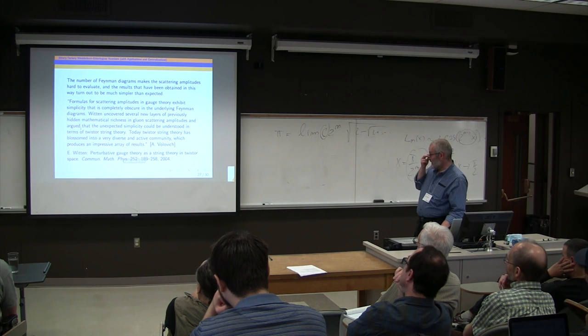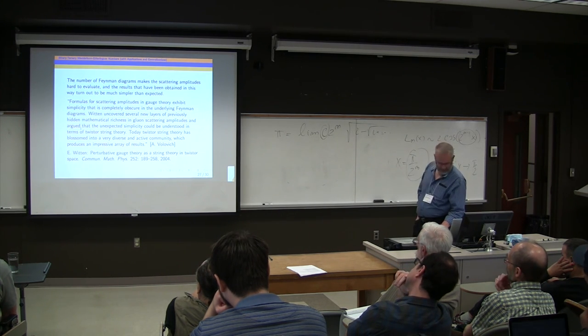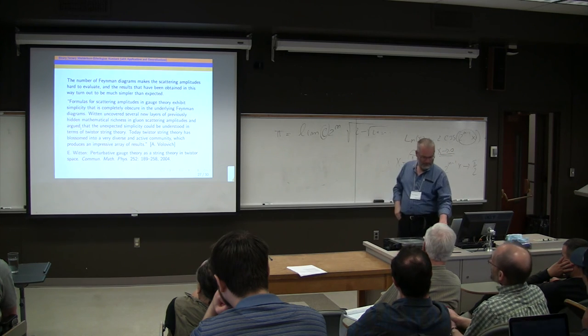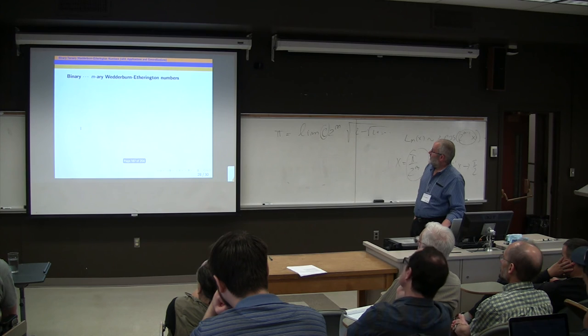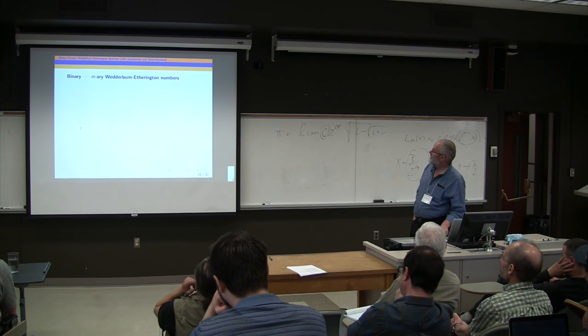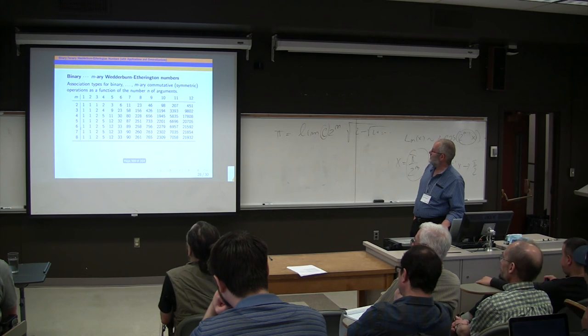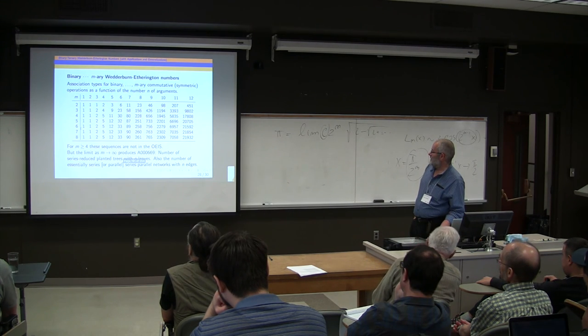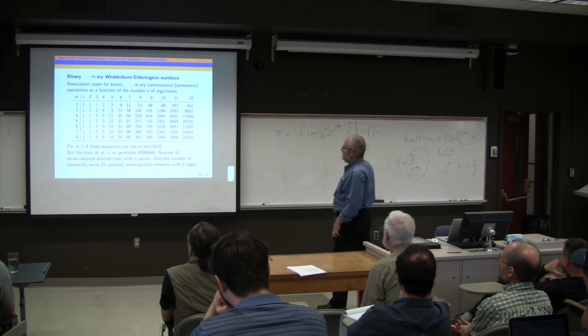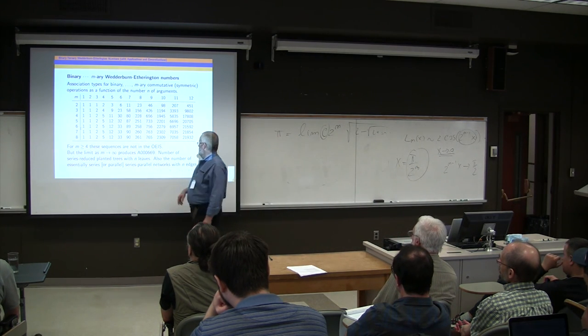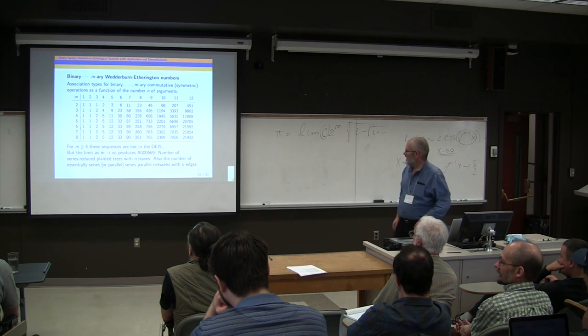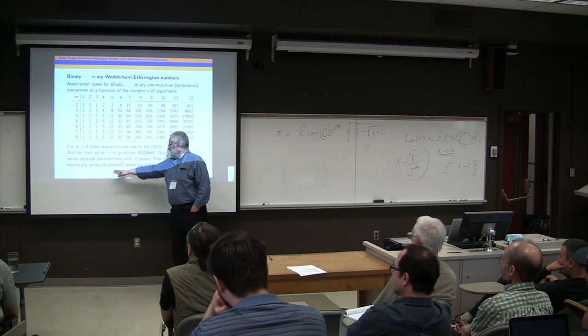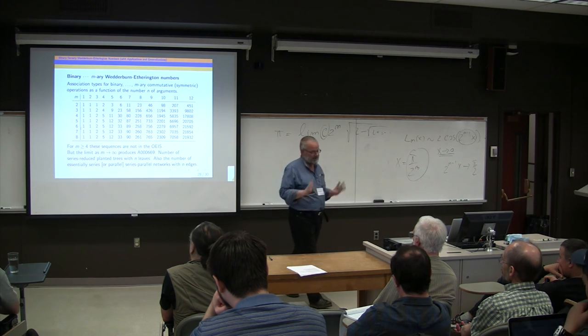And, well, just to touch on generalizations in the last minute, we can extend this from binary, ternary, up to m-ary operations. You've got numbers like this. These sequences are not in the encyclopedia, but the limit, again, the limit is a nice sequence. You can see it's sort of converging here. It's a number of, no, I didn't quite understand what this was supposed to be saying. Series-reduced planar trees with n leaves, essentially series or parallel, series parallel networks with n edges. Don't ask me what that means.